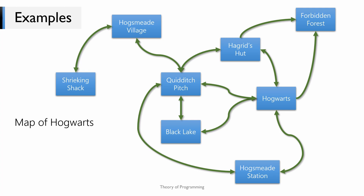Now you know that all paths are not the same — some could be long, some could be very short, and there's a Whomping Willow between the direct path from Hogwarts to the Forbidden Forest, so you may want to avoid it. So let us add some weights to our edges, which would represent the distance or cost to travel between these places.